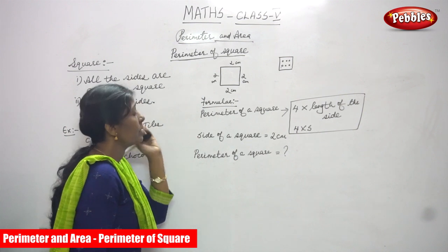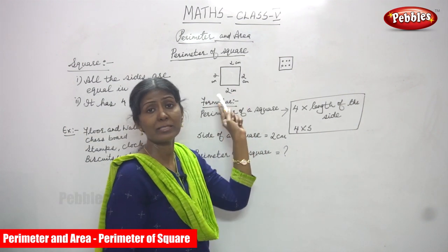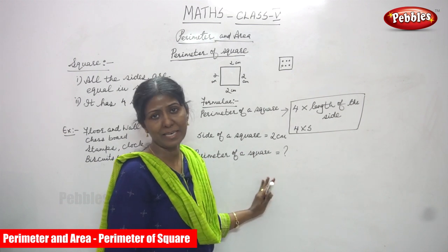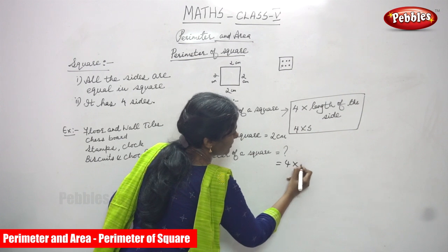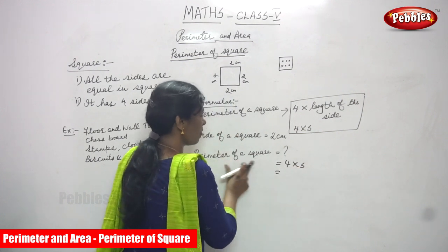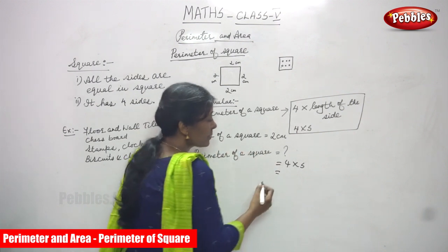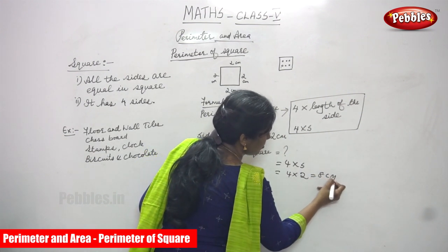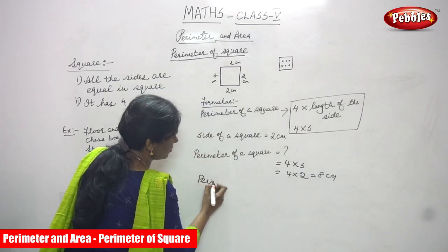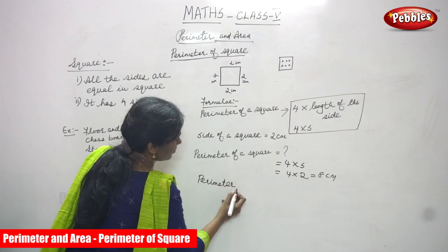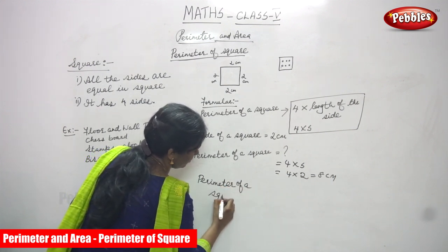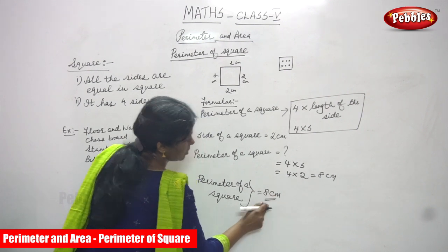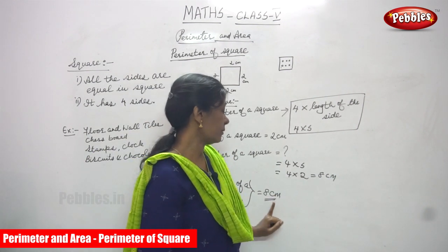Now we are going to solve the problem. The side of a square is equal to 2 centimetres — I have already drawn this in the picture. You have to find the perimeter of the square. Apply the formula: perimeter of a square equals 4 into S. So 4 into 2 equals 8 centimetres. The perimeter of the square is 8 centimetres. This is the right answer for the question.